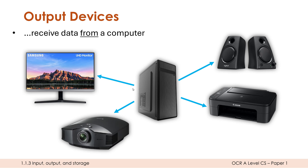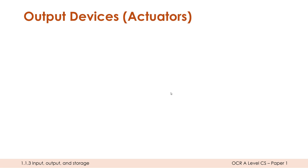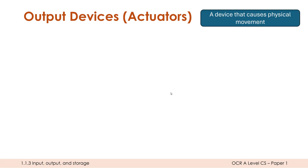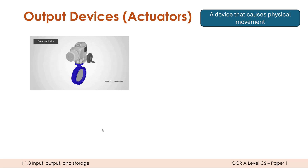Here are some computer-related output devices. Actuators are another type, and they do appear in mark schemes so you should know them. An actuator is a device that causes physical movement — it's a massively broad category. Here is an actuator rotating around; the computer gives it a signal and it outputs movement, rotating this circle around.